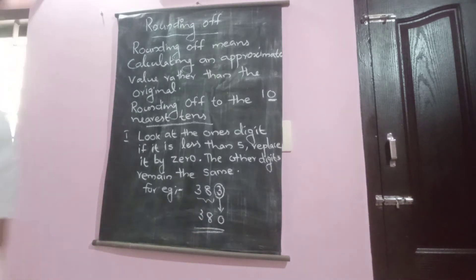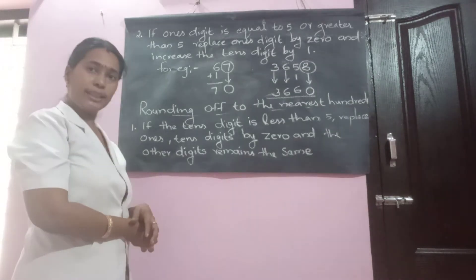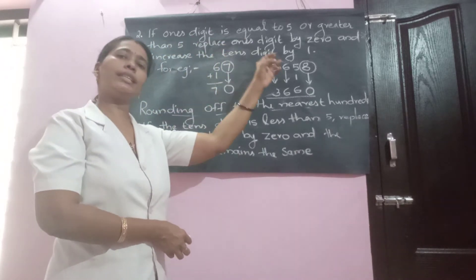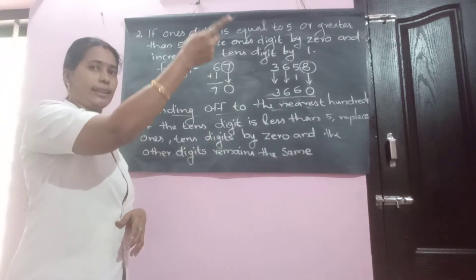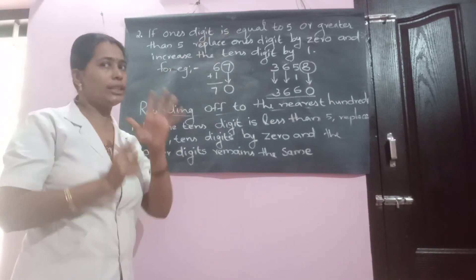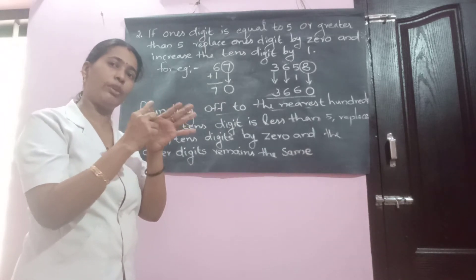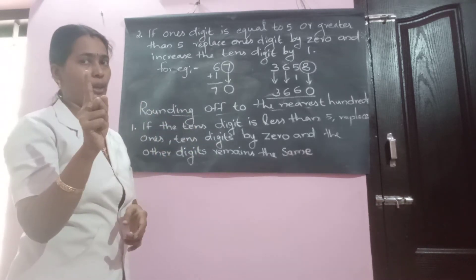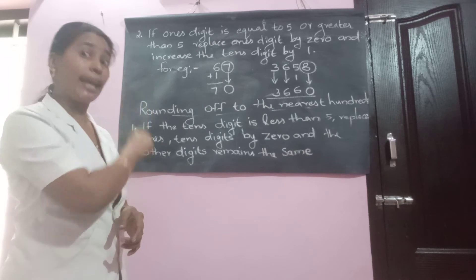Let us continue with the second rule. What does the second rule say? Same as the first: look at the one's digit, replace the one's digit by zero. But if the number is equal to five or greater than five — that is five, six, seven, eight, or nine — add one to the ten's digit.